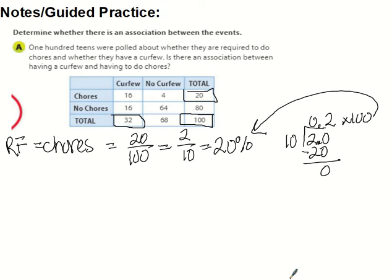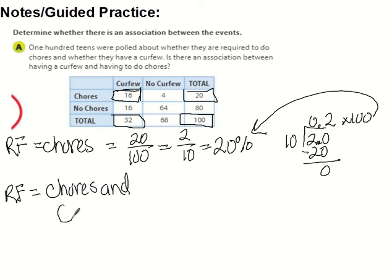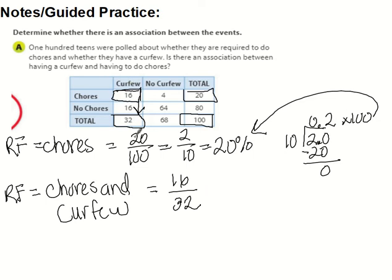Now we want to find the relative frequency of having both chores and a curfew. That's 16 people. We compare it to the curfew total, which is 32, because we want to know the relationship between chores and a curfew. So 16 over 32 reduces to one half, which is 0.5. Times that by 100 and we get 50%.